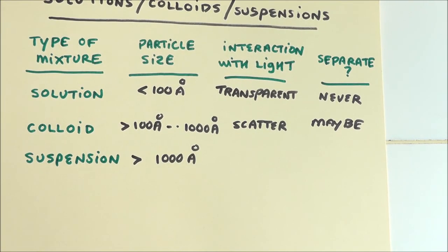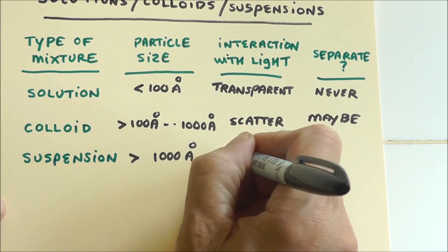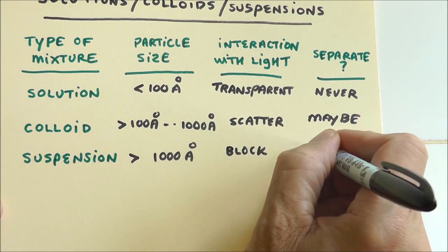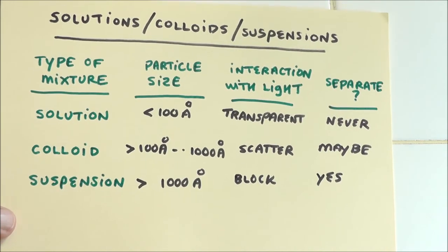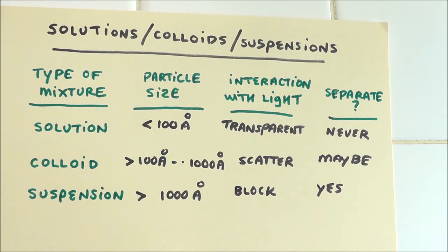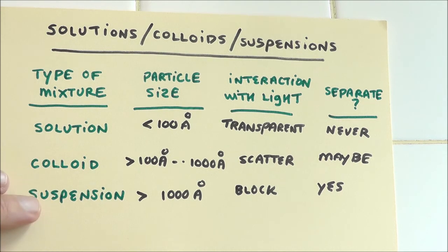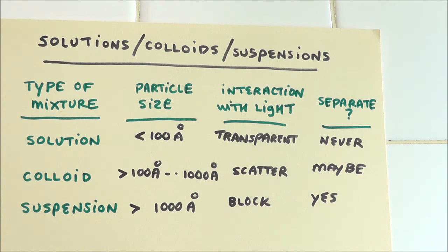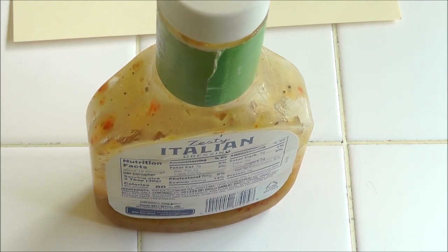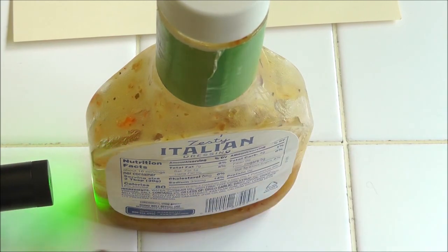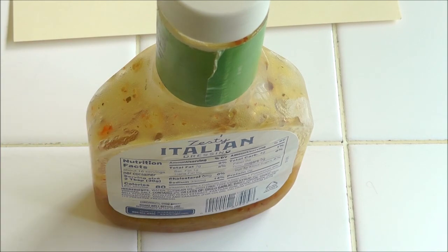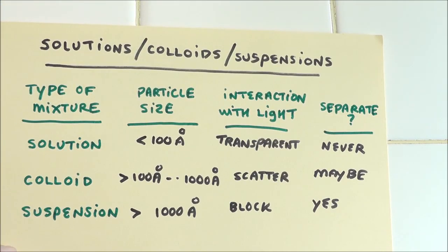Suspensions flat-out block light. Suspensions will eventually settle out unless they have help from a third-party molecule that keeps them mixed — like milk, which has been homogenized; without that, cream separates to the top. Here's an example of a suspension: I've got some zesty Italian salad dressing. If I try to shoot the laser through it — it's not coming out the other end. It flat-out blocks the light, not scatters, not transmits — blocks. So folks, with a laser pointer you can find out: is this a solution, a colloid, or a suspension?